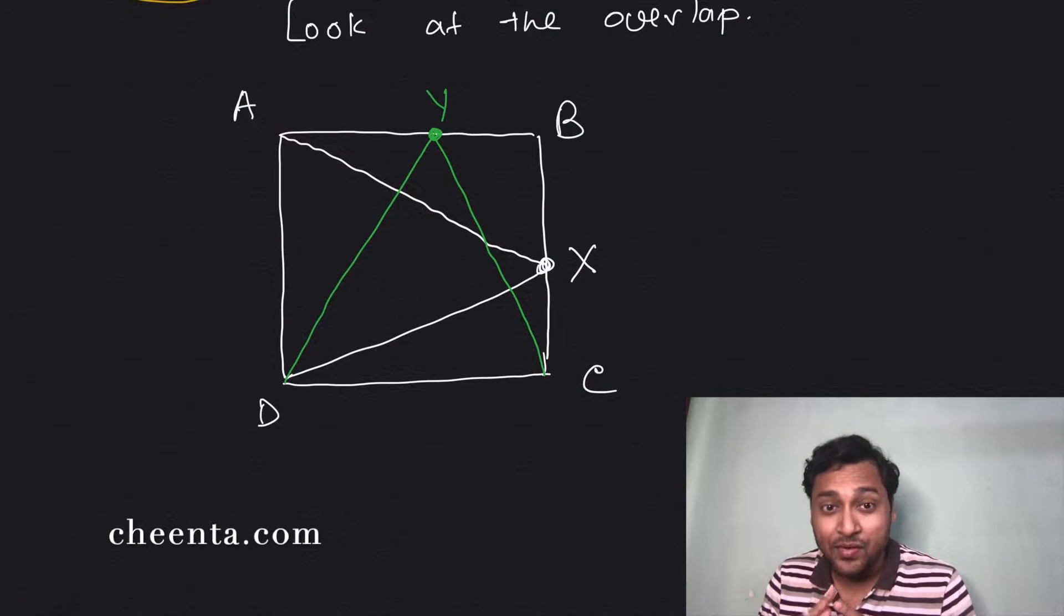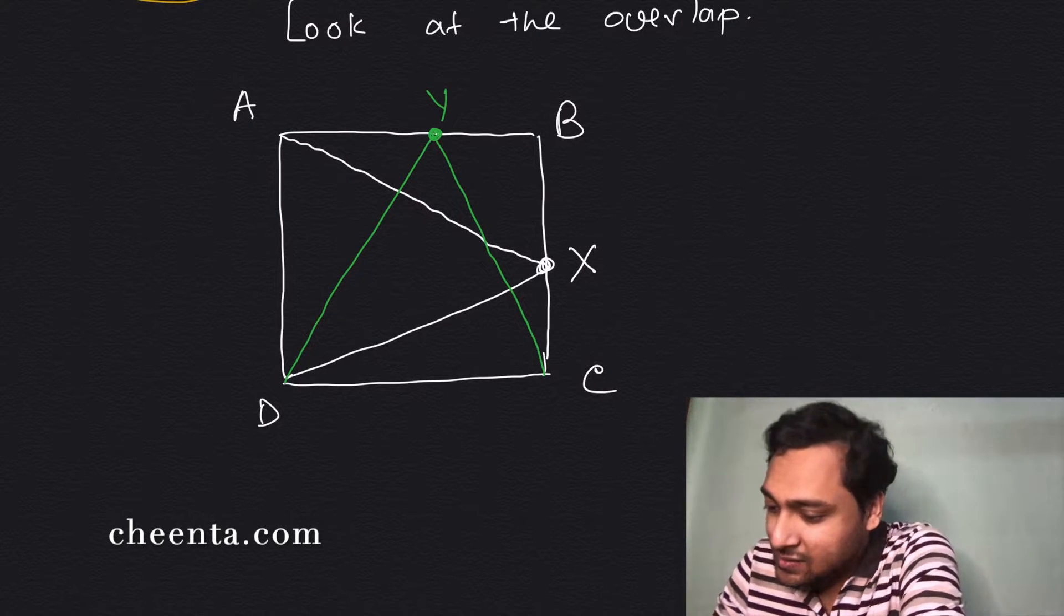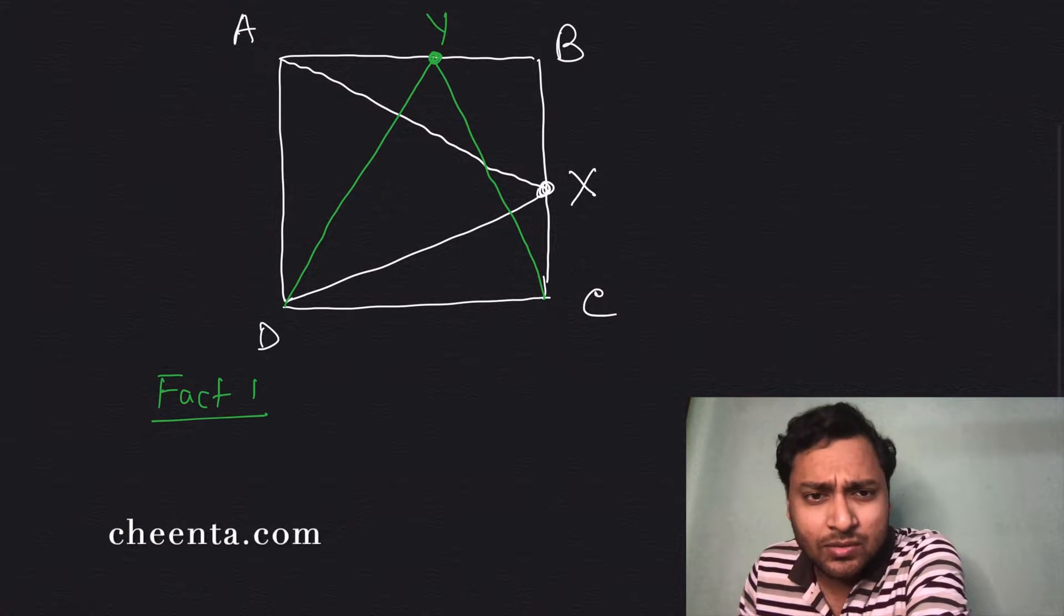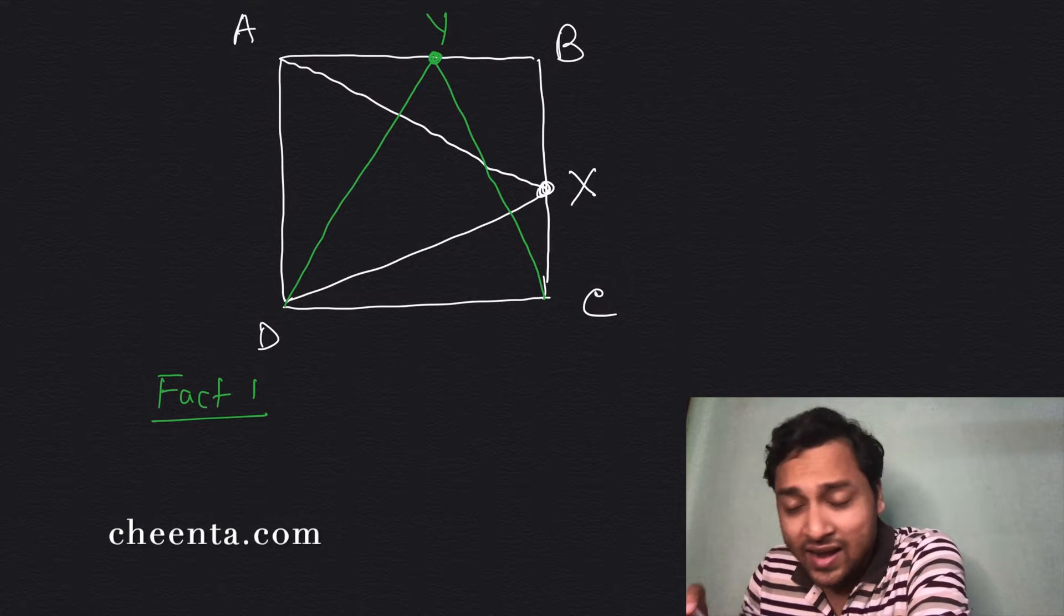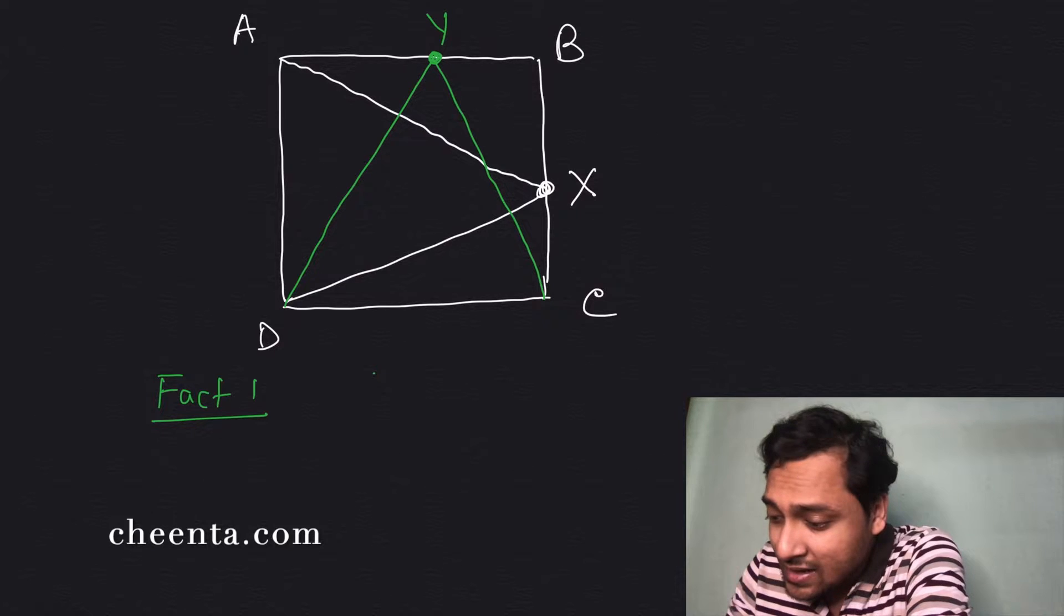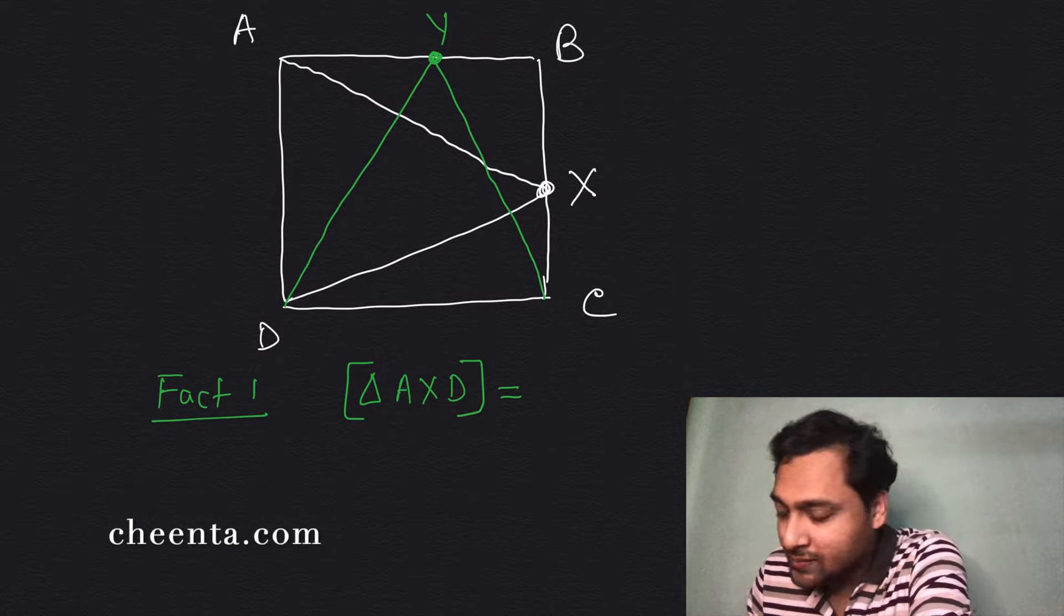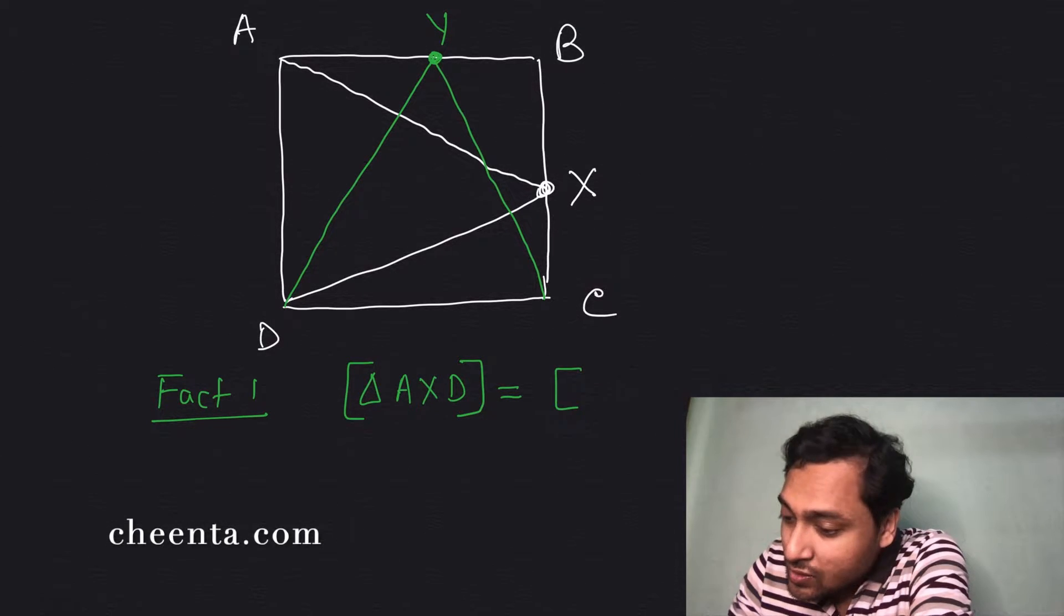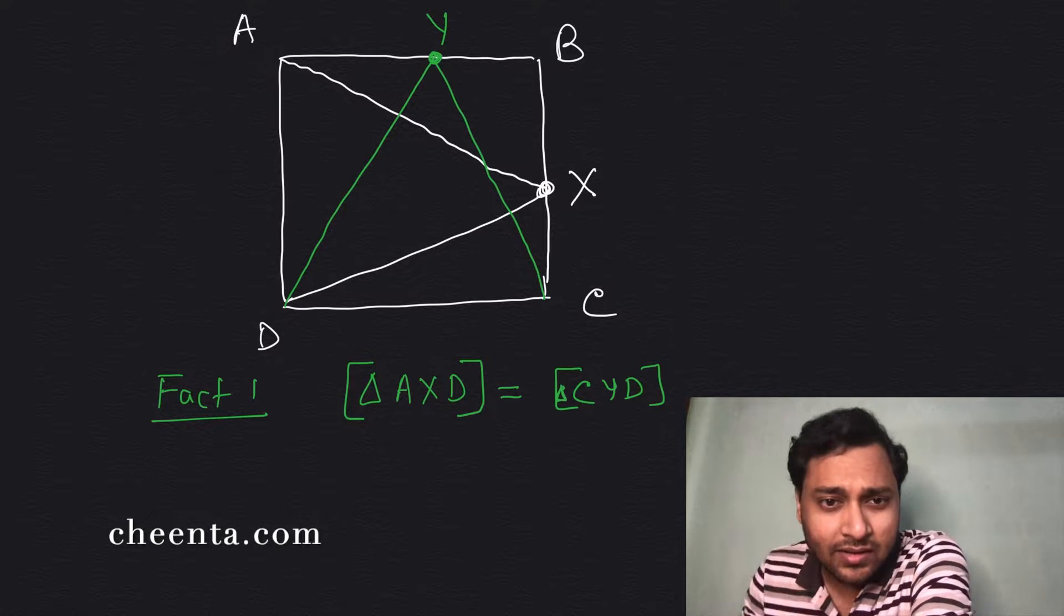Okay, so the first thing is that these two triangles, the white triangle and the green triangle, both of them are of equal area, right? So that's fact one. And you can tell me in the comment in the description why this fact one is true. What is the rigorous reason that this fact one is true? And what is fact one? The triangle AXD is equal in area, so sometimes we put square brackets around the triangle to indicate area, is equal to the area of CYD, this triangle.